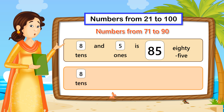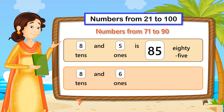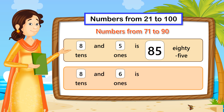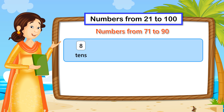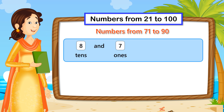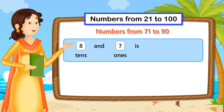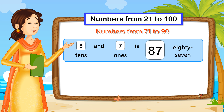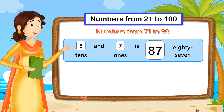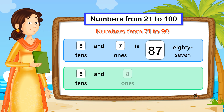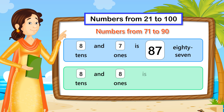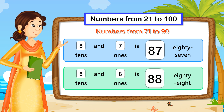8 tenths and 6 ones is 86. 8 tenths and 7 ones is 87. 8 tenths and 8 ones is 88.